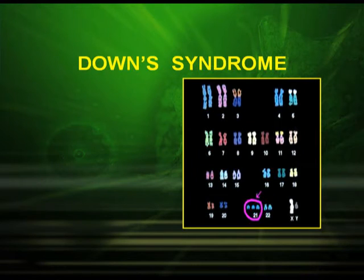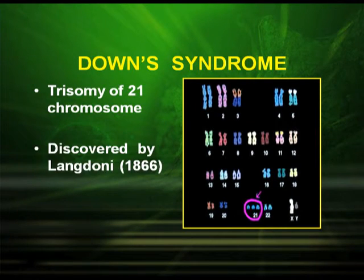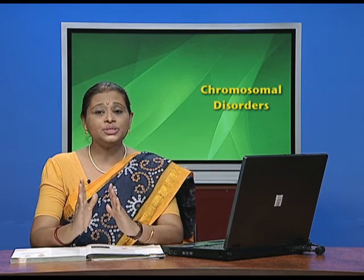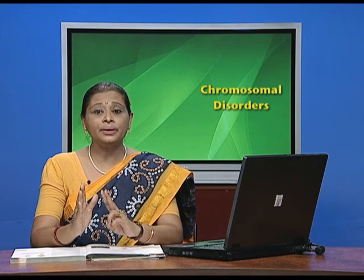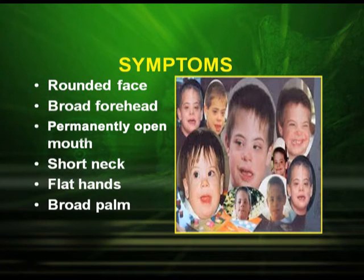Now let us study some chromosomal disorders in humans. One of the common disorders is Down syndrome. It is due to trisomy of chromosome 21, discovered by Langton in 1866. Trisomy of chromosome 21 means the 21st chromosome is present in three copies. The important symptoms are rounded face, broad forehead, permanently open mouth, short neck, flat hands, broad palm, and small fingers, as you can easily see in the following picture.